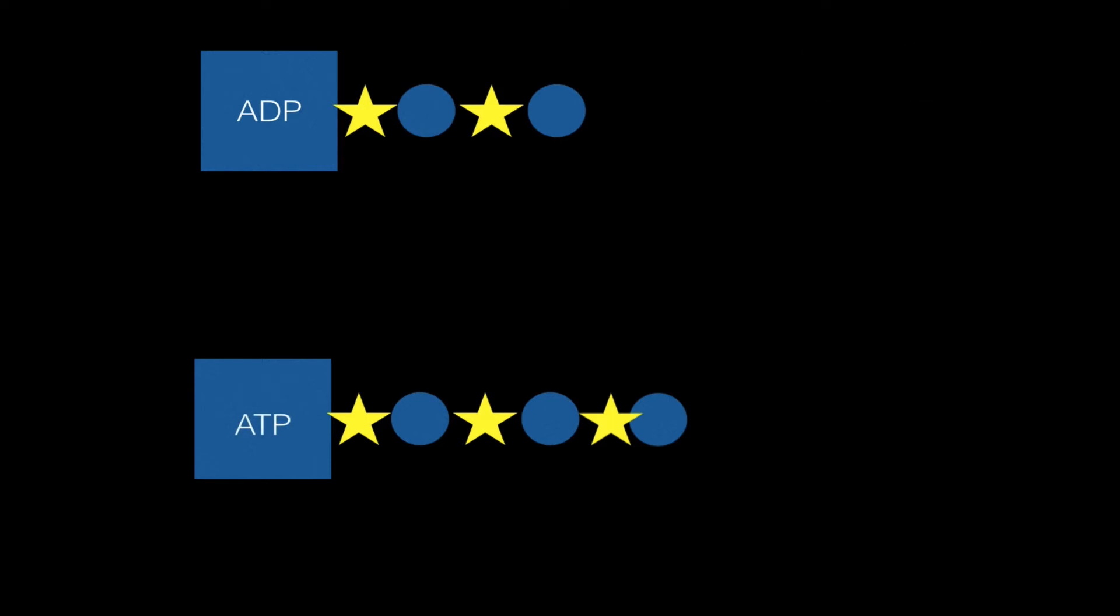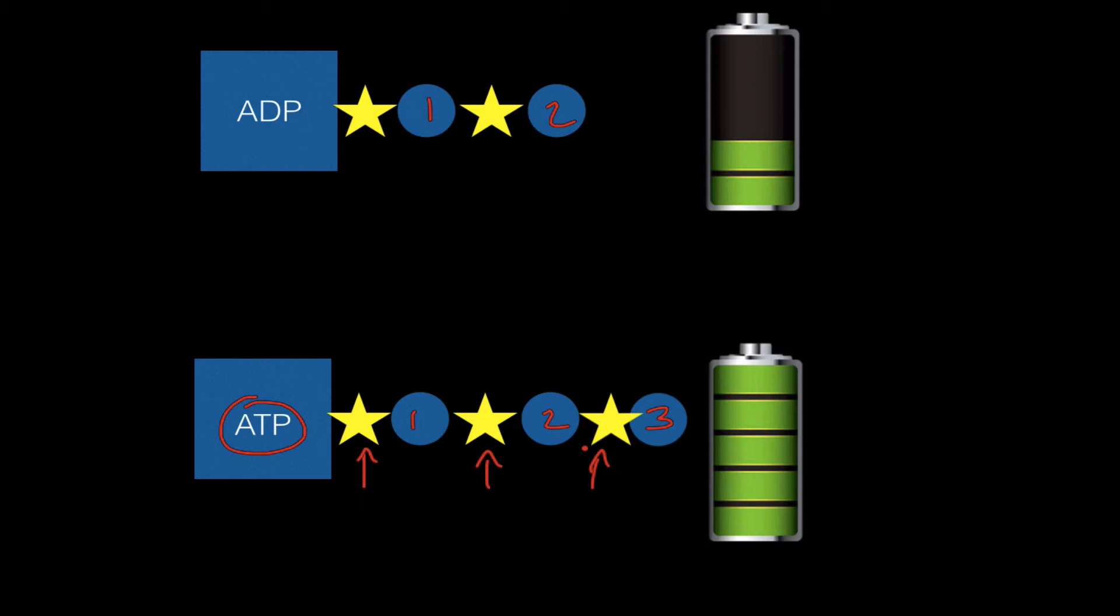So what we end up with now is another molecule called ATP which has one, two, three phosphates instead of just two. And this molecule, because it has energy here, here, and here, contains more energy. So you can think about it as like batteries.